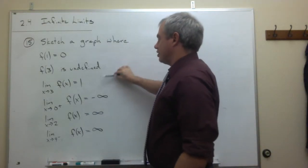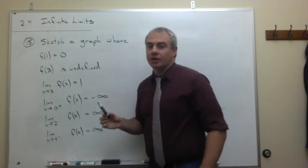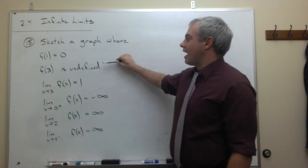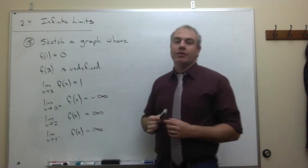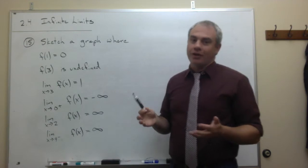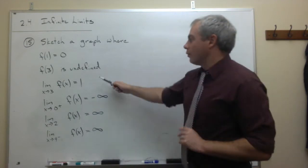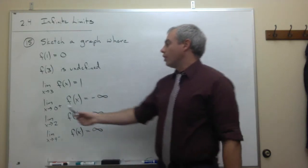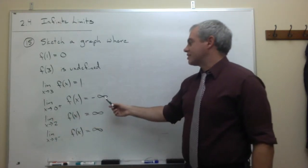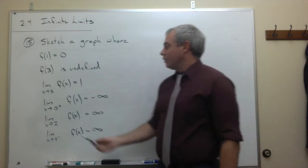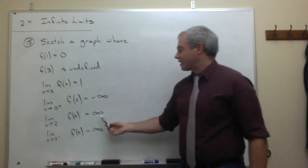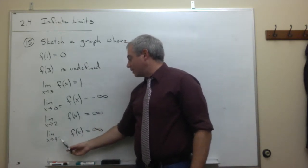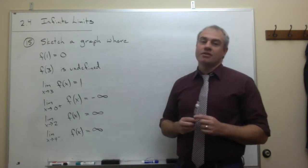We have six conditions, so let's run through them. We want f(1) to be 0. We want f(3) to be undefined — there should be no functional value at 3. We want the limit as x goes to 3 of f(x) to be 1. We want the limit as x goes to 0 from the right of f(x) to be negative infinity. We want the limit as x goes to 2 of f(x) to be infinity. And finally, we want the limit as x goes to 4 from the left of f(x) to be infinity.